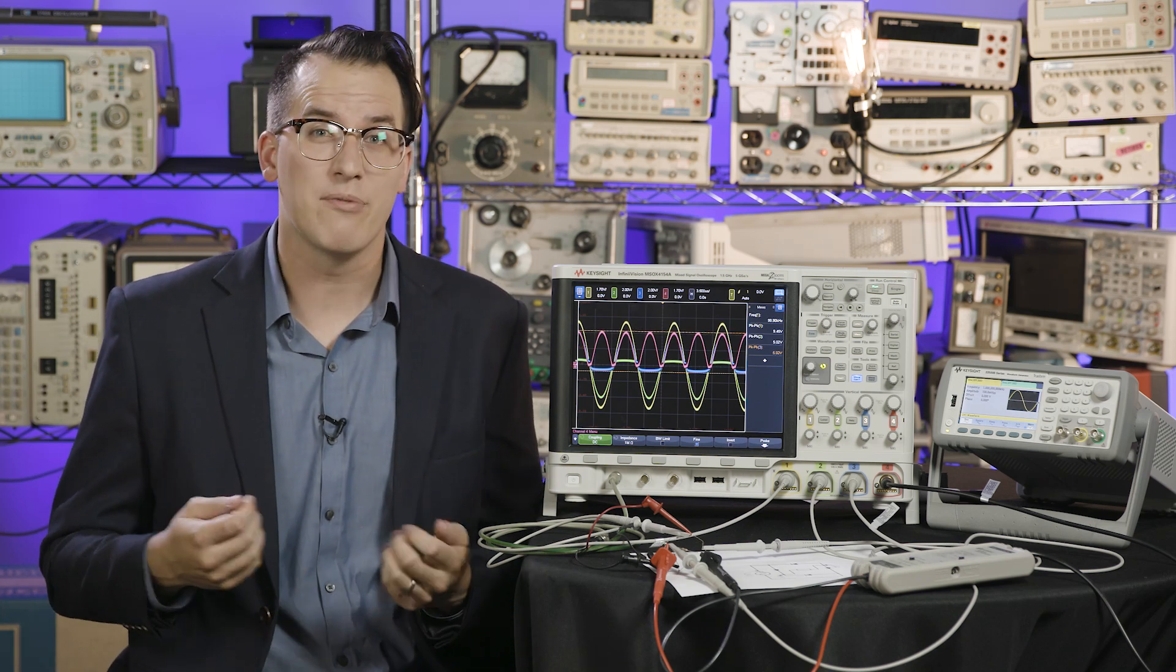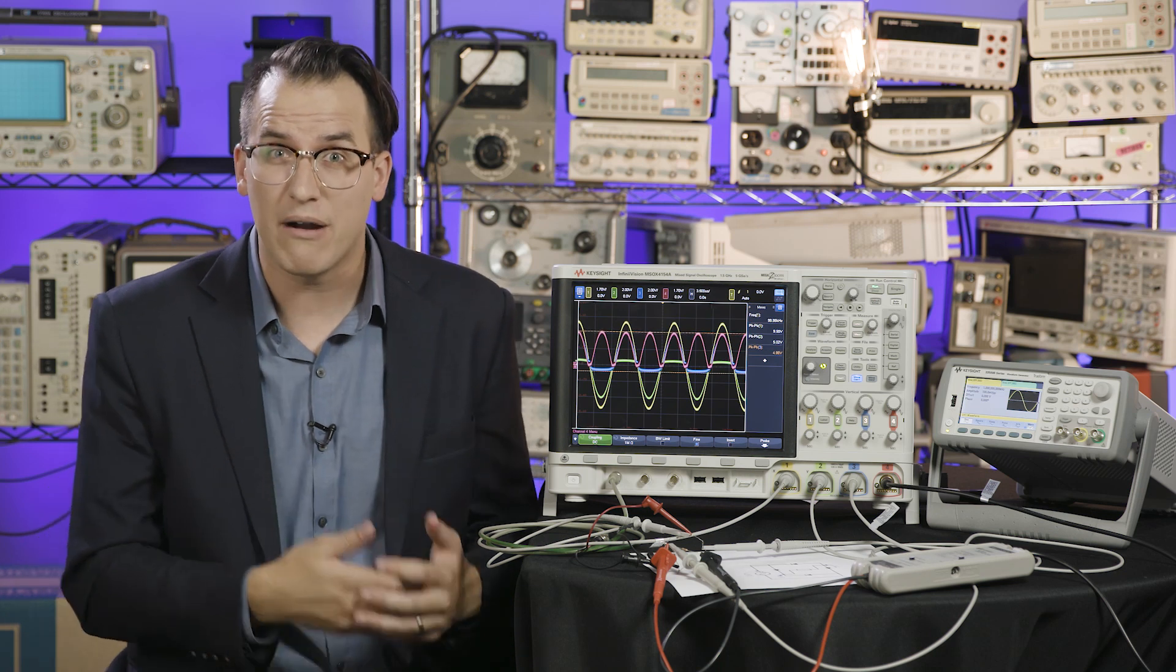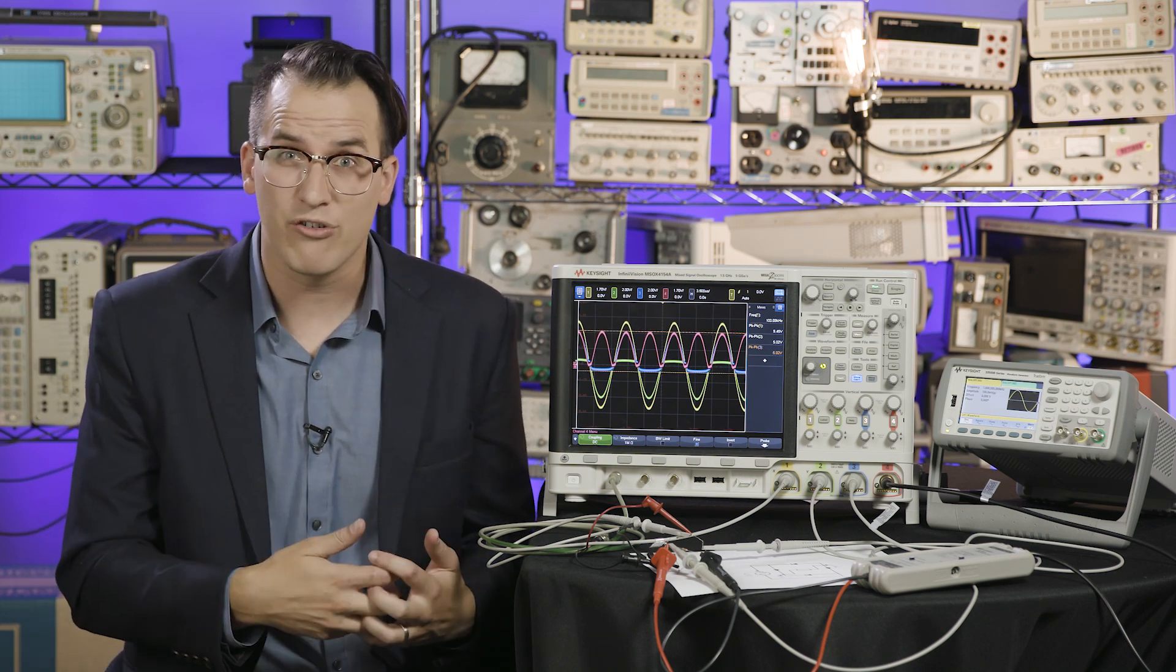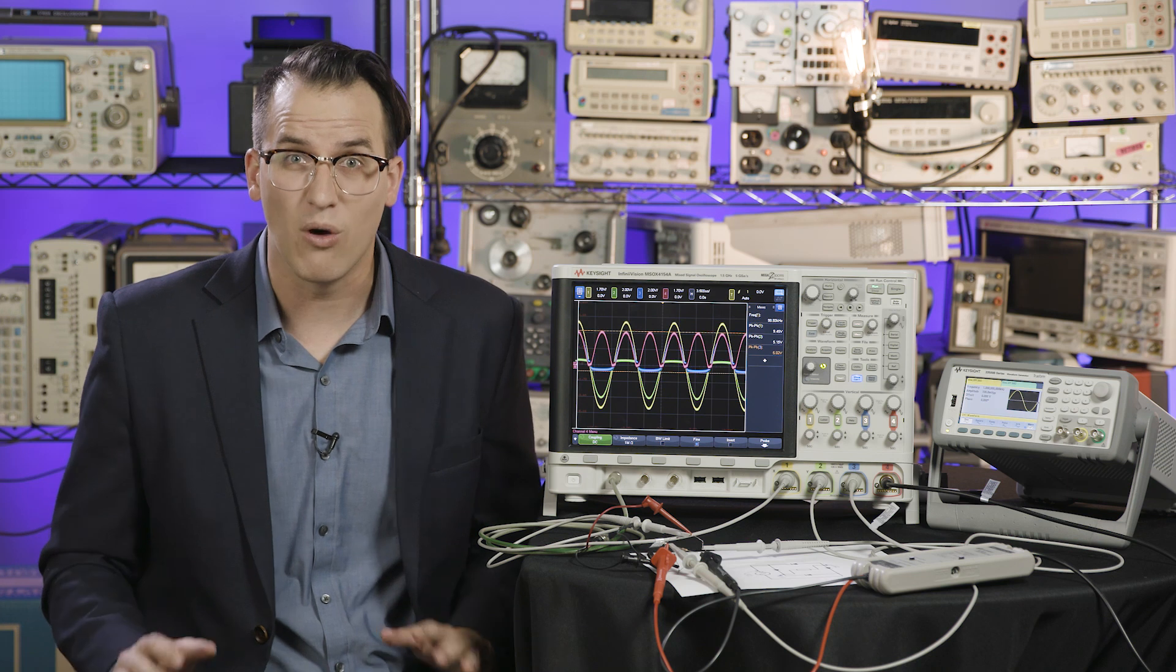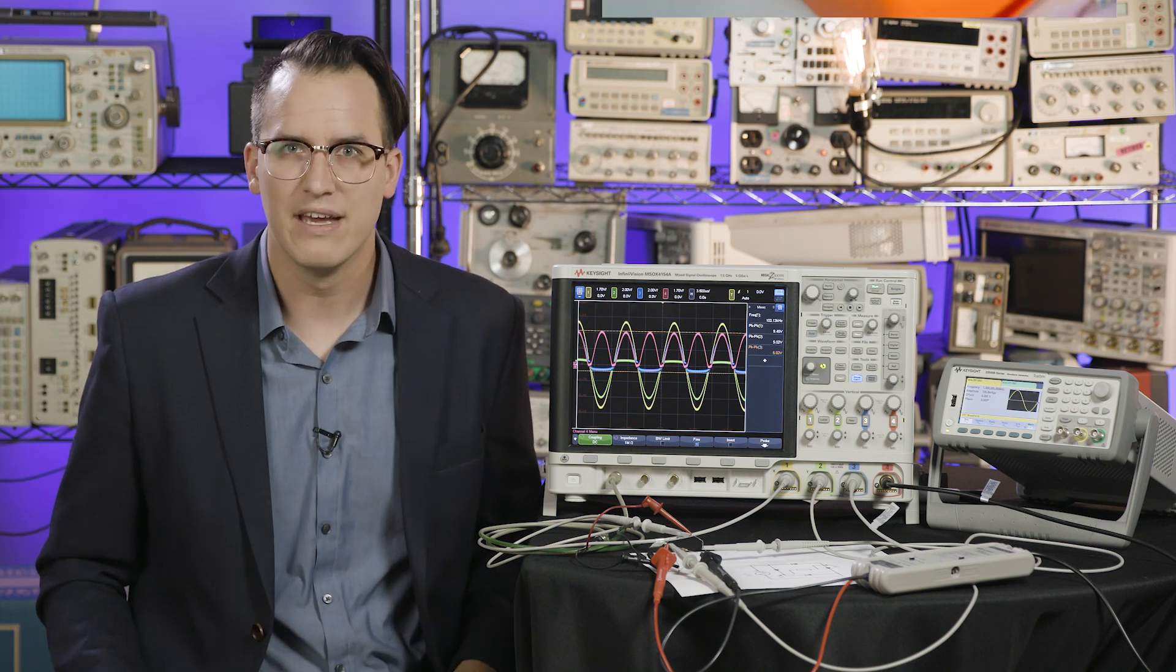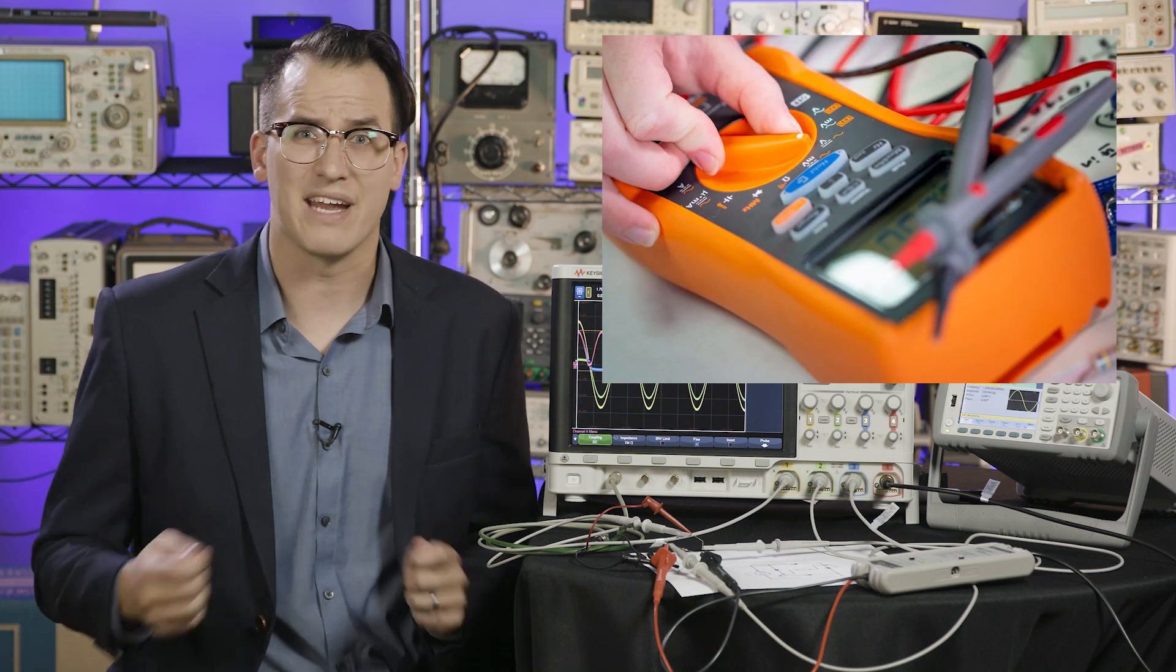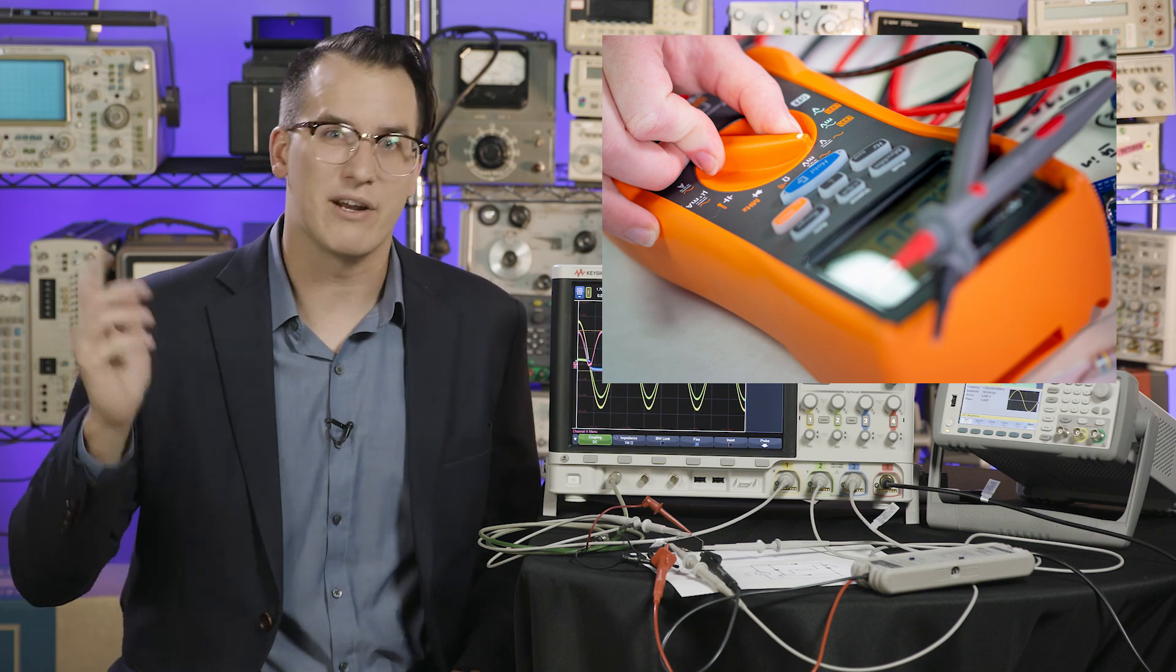For example, differential probes are often used when measuring switch mode power supplies, inverters, and motor drivers, or really any time you don't want to measure ground reference measurements. This is also what makes DMMs and handheld scopes so useful, they don't make ground reference measurements.